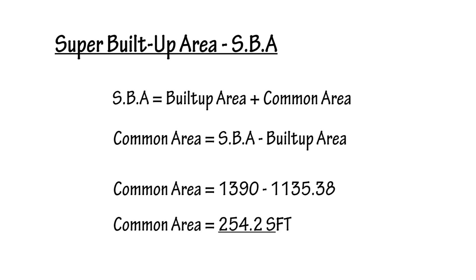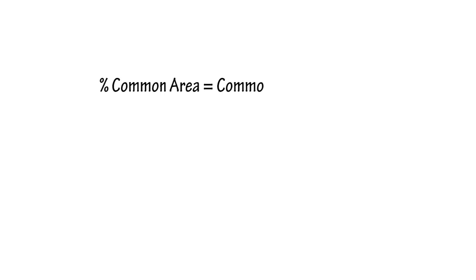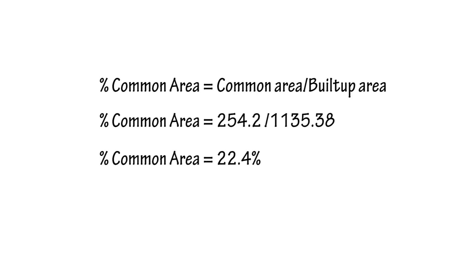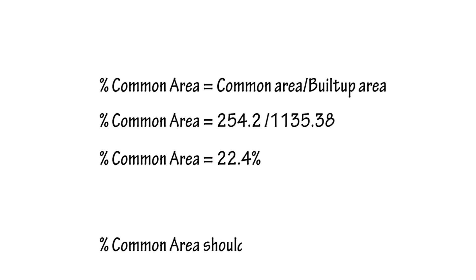To find the percentage, we divide the common area by the built-up area, which gives us 22.4%. This is the common area percentage, which is multiplied across the flat's built-up area to get the saleable area. This is the extra area you will be paying for — make sure it is less than 24%.